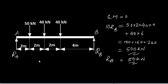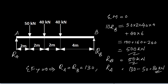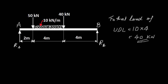Now using the summation of forces in the y-direction equal to zero: RA + RB = 50 + 40 + 40 = 130 kN. We know RB is 50 kN, therefore RA = 130 − 50 = 80 kN. So go through the problem and make a clear understanding of how to deal with a problem where you have a uniformly distributed load and a point load acting together.